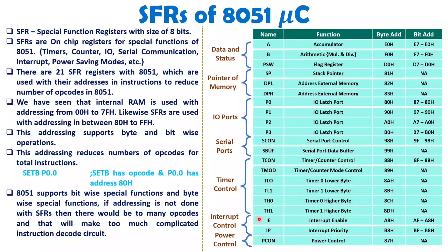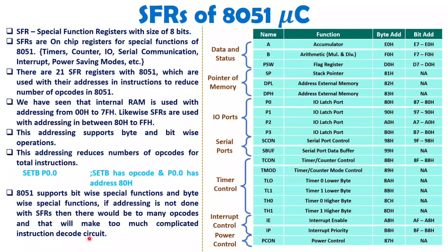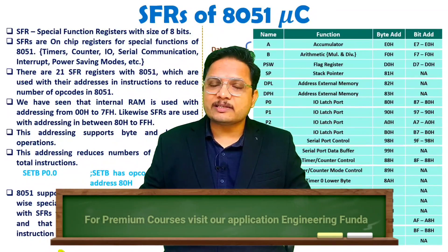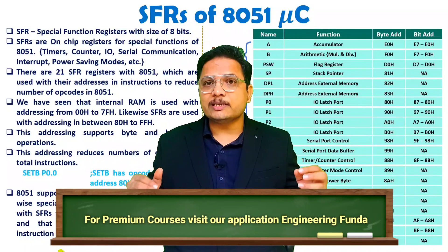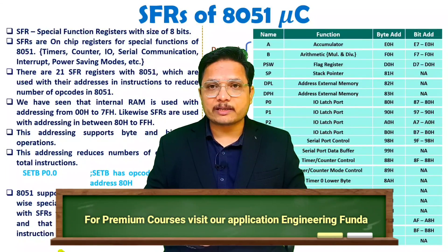In total, there are 21 Special Function Registers. You don't need to memorize all their names right now. The key point is that these registers are used in instructions via their addresses so that when you assemble a program, these addresses appear automatically. This is done to minimize the number of opcodes, preventing the instruction decode circuit from becoming too complex. I hope this is clear — if you have any confusion, post it in the comment box. Thank you for watching.